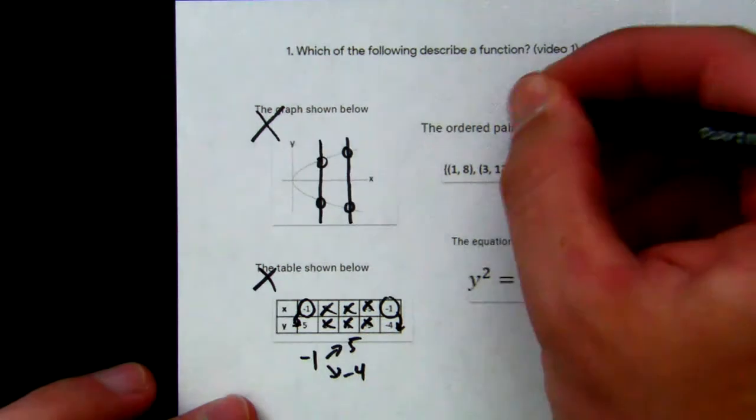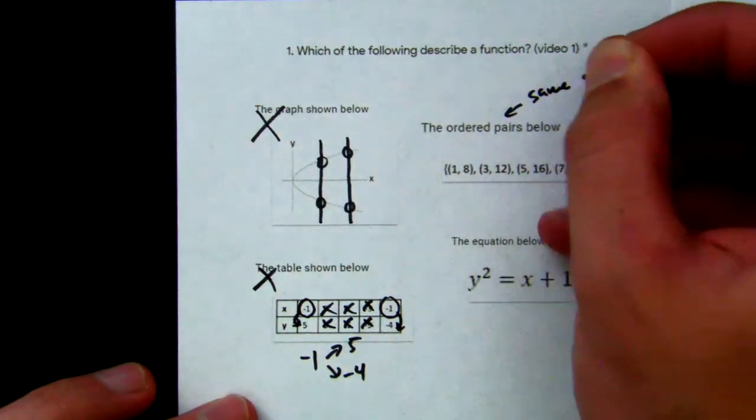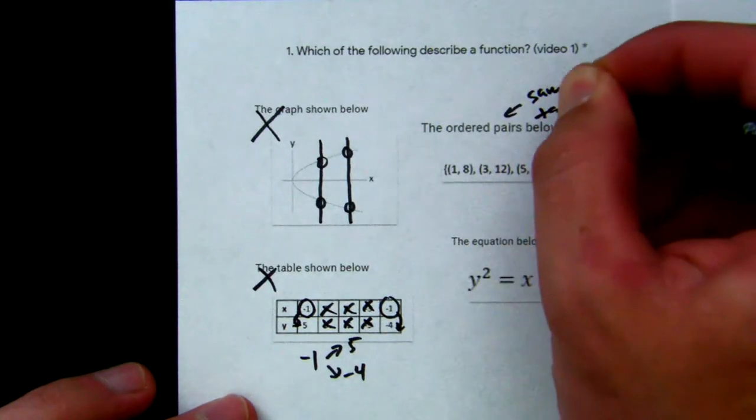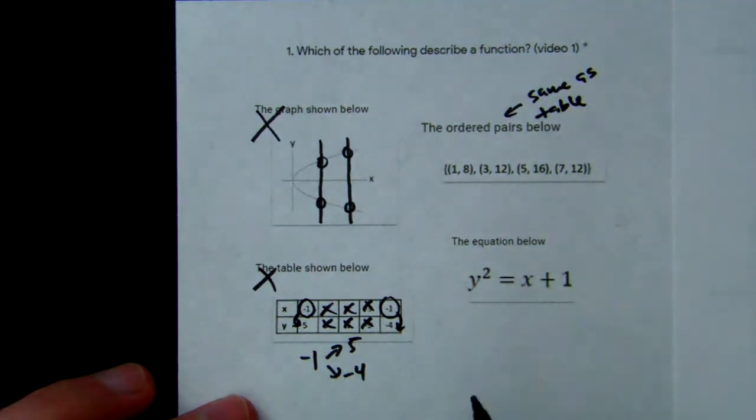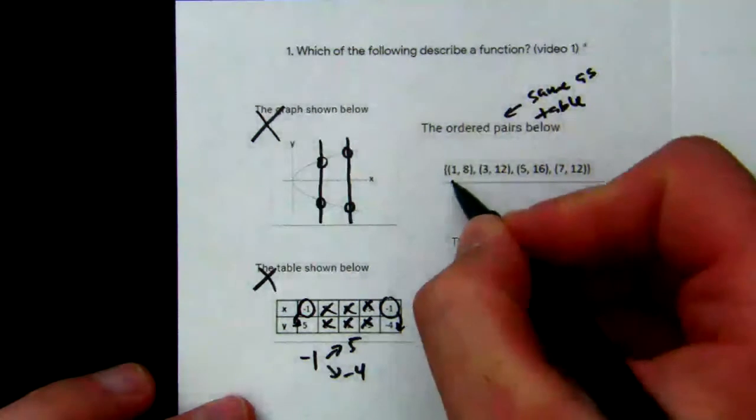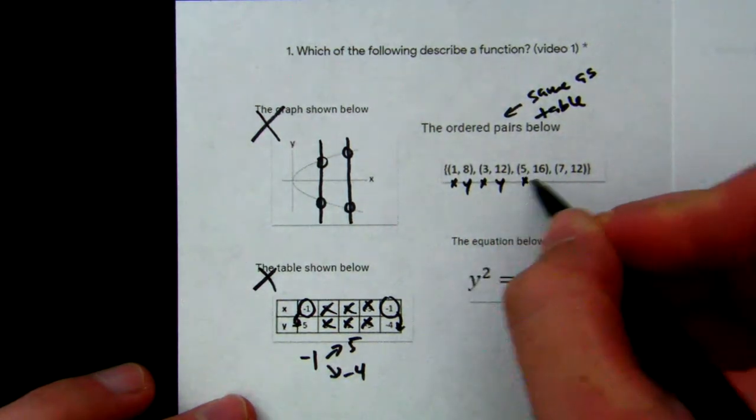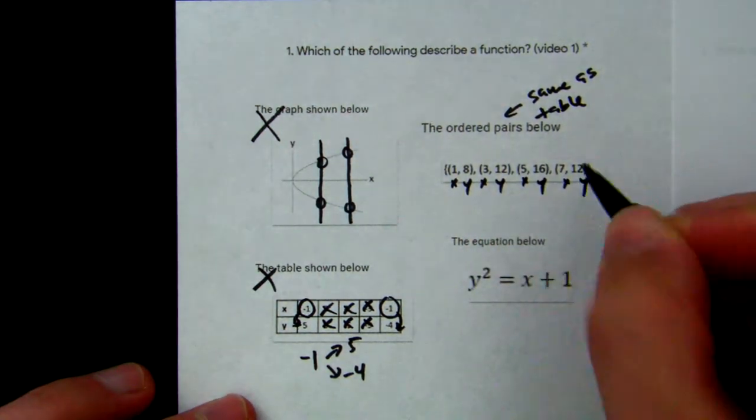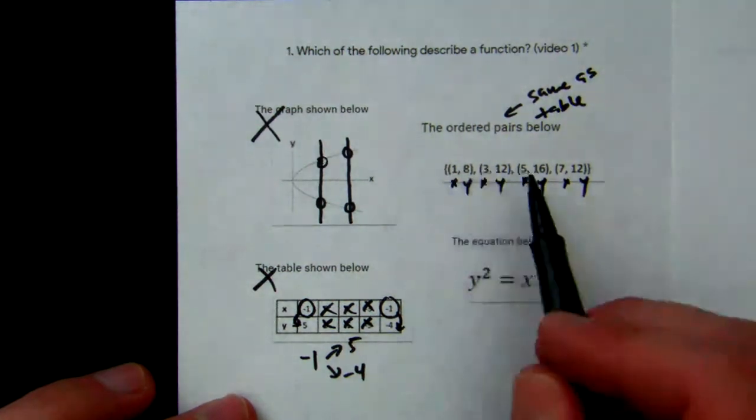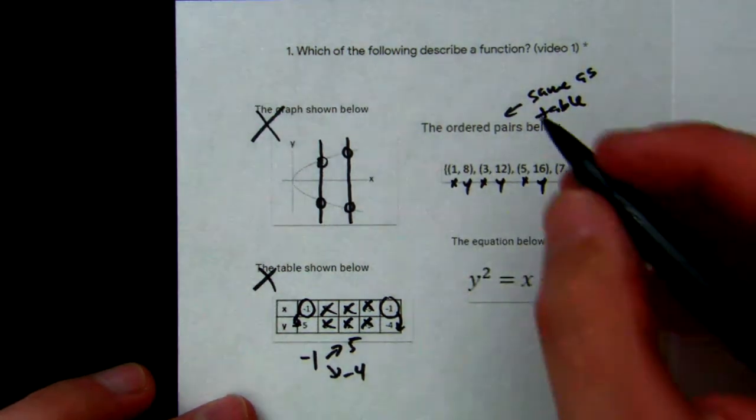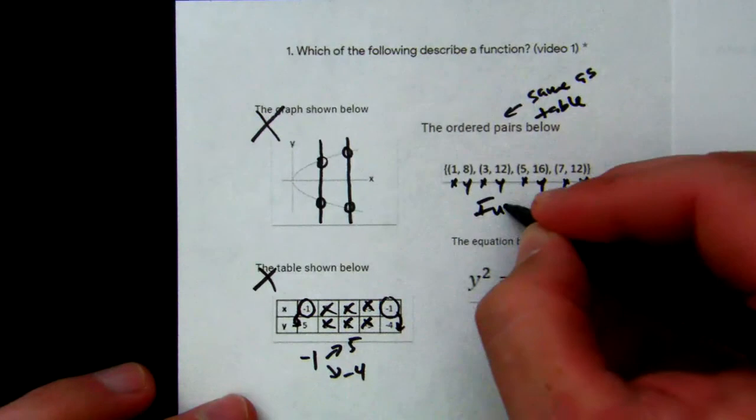Ordered pairs are the same as tables. We look at our x-values first. If any are the same, we circle them. So we have 1, 3, 5, 7. Remember x always comes first in ordered pairs (x, y). They are all different, so we know that this one is a function.